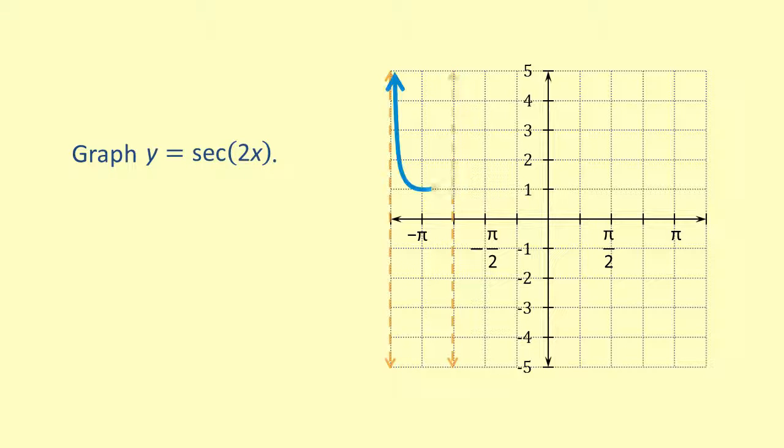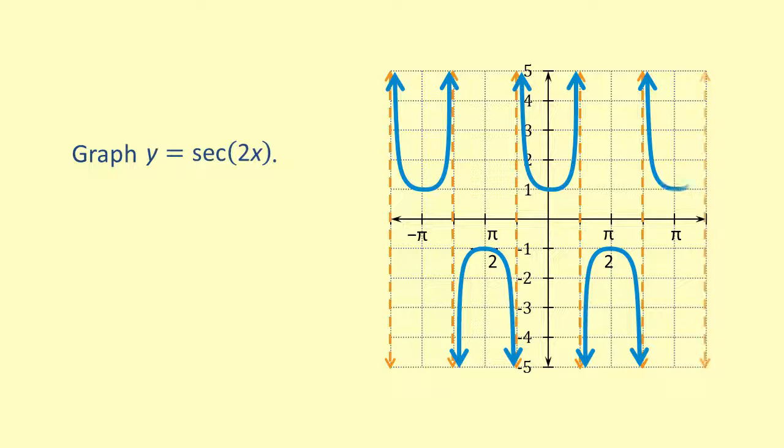Lastly, use a table of values for x values of negative pi, negative pi over 2, 0, pi over 2, and pi, or a graphing calculator to graph y equals secant of 2x.